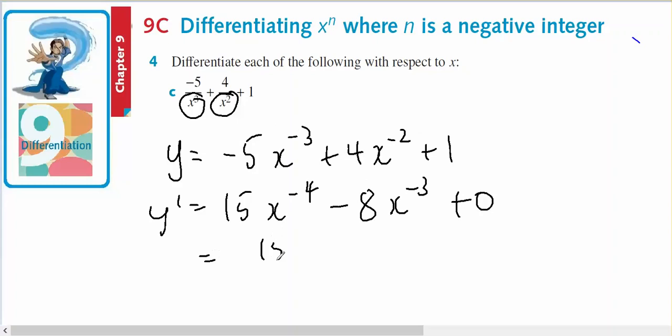So I'll leave the 15 there but I'll put x to the 4 down the bottom, and I'll leave the 8 there and put x to the 3 down the bottom. And that's going to be my derivative.